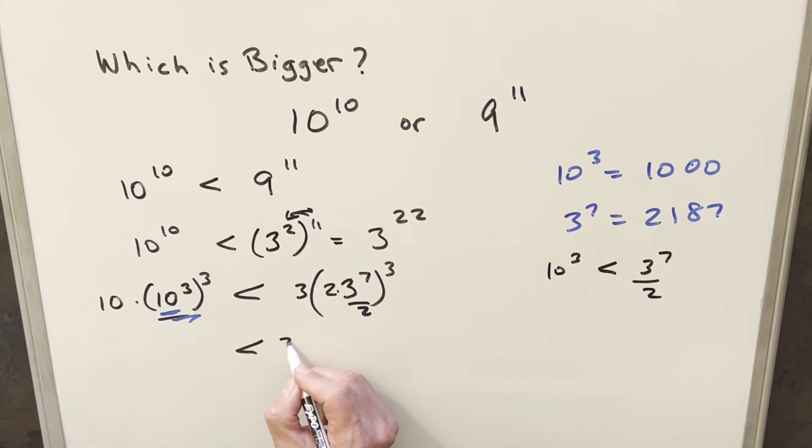But then just to clean all this up, I can split this up, I can write this as, I can split up the 2 and write this as 2 cubed here, and then we have our 3 to the 7th over 2, all cubed.